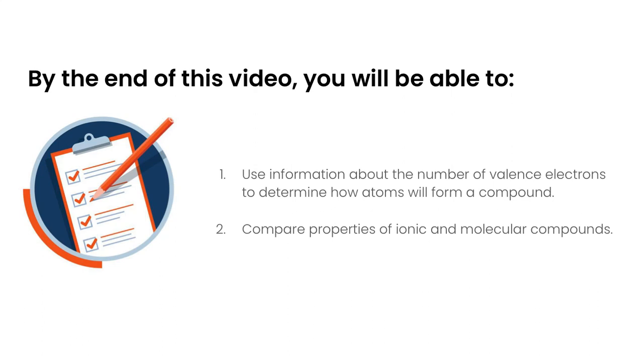In this video we're going to take a look at how simple compounds form. By the end of this video you're going to be able to use information about the number of valence electrons to determine how atoms will form a compound and you'll also be able to compare properties of two different compounds: ionic and molecular, also known as covalent compounds.